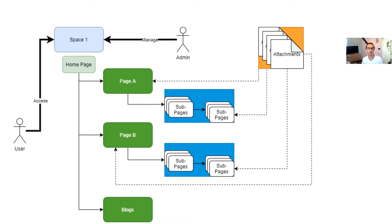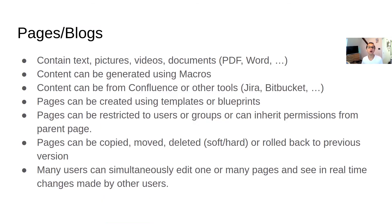A page can contain attachments — for example you can upload Word documents, PowerPoint presentations, or PDF documents. Within spaces in Confluence there are also blog pages. Blogs are identical to regular pages except they are used to spread special news, like a weekly newsletter that appears within your space or Confluence site. A page or blog can contain text, pictures, videos, and documents. Content can be generated manually by writing, or automatically — for example by connecting Confluence with Jira to show a report about issues currently in progress.